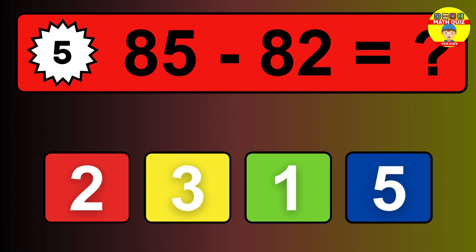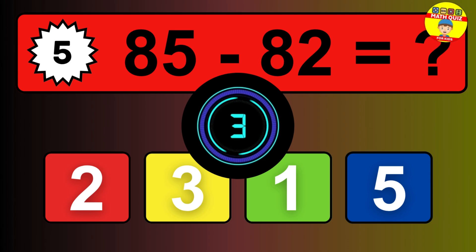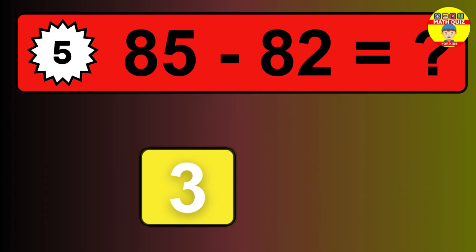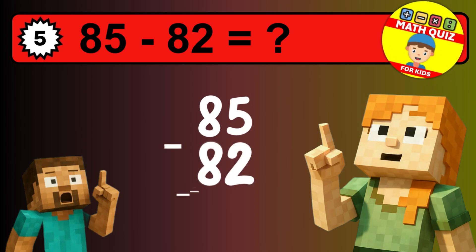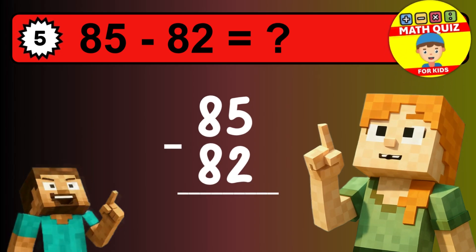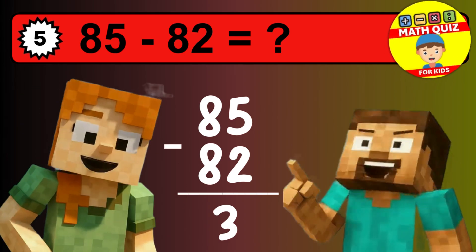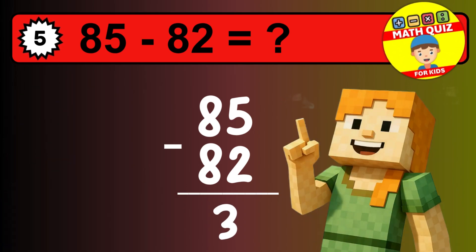What is 85 minus 82? Time to think. Let's solve this step by step. We start with the units: 5 minus 2 is 3. Then we go to the tens: 8 minus 8 is 0. The final answer is 3.